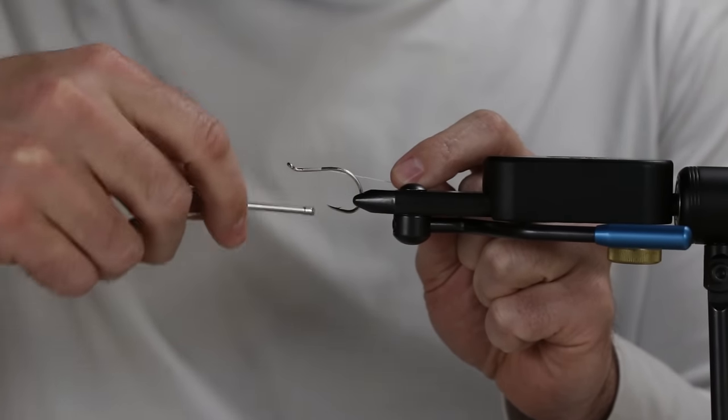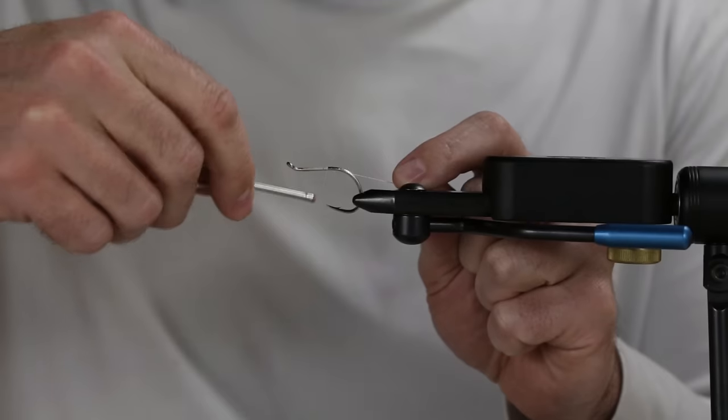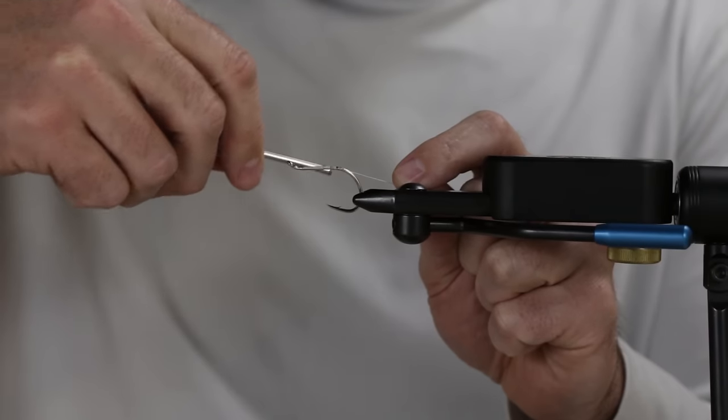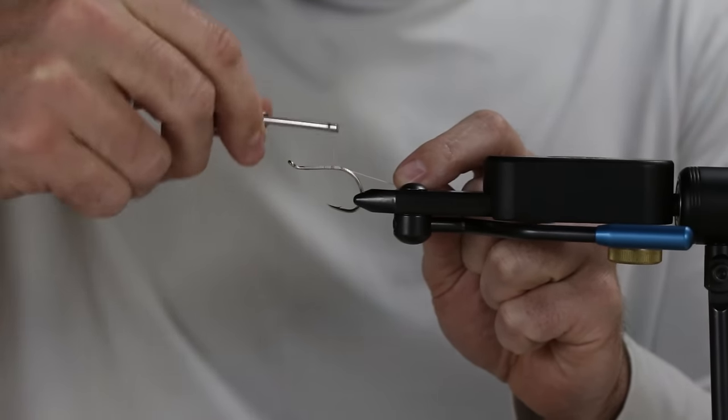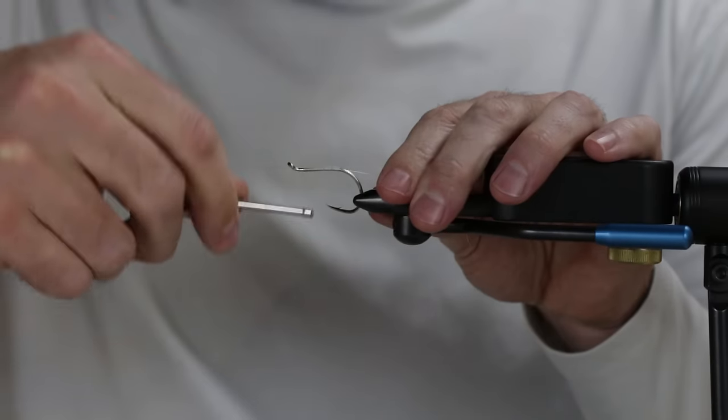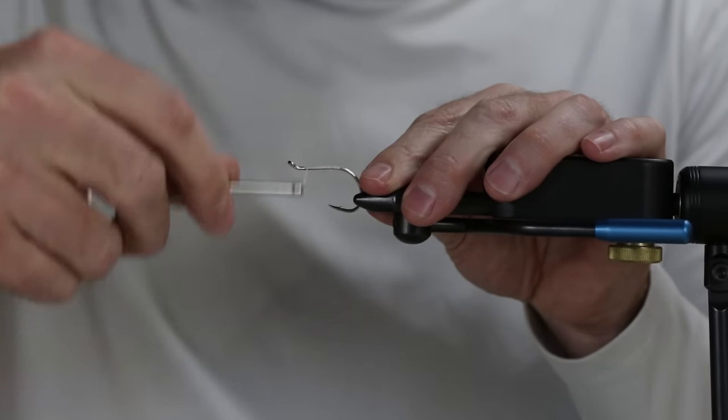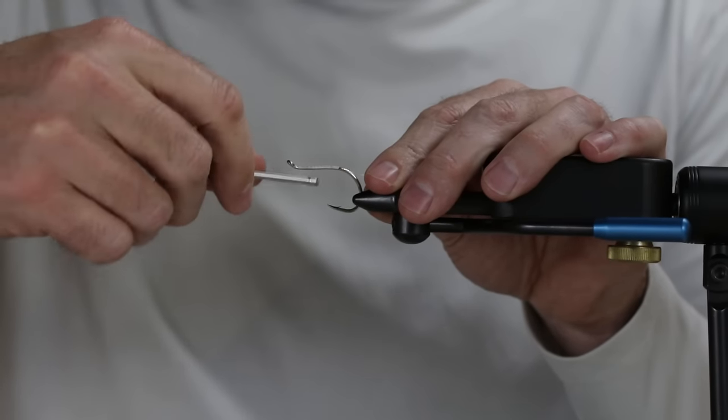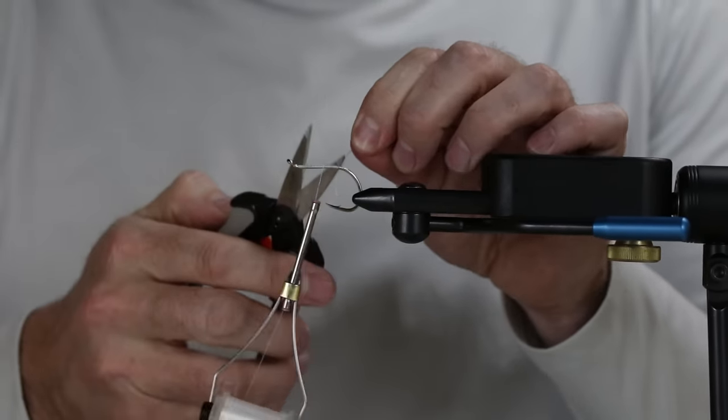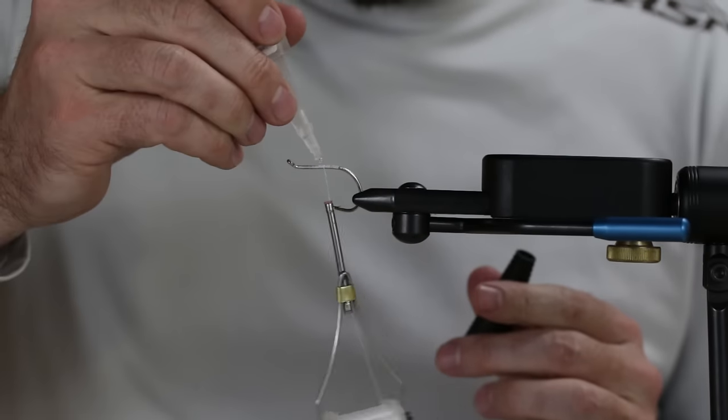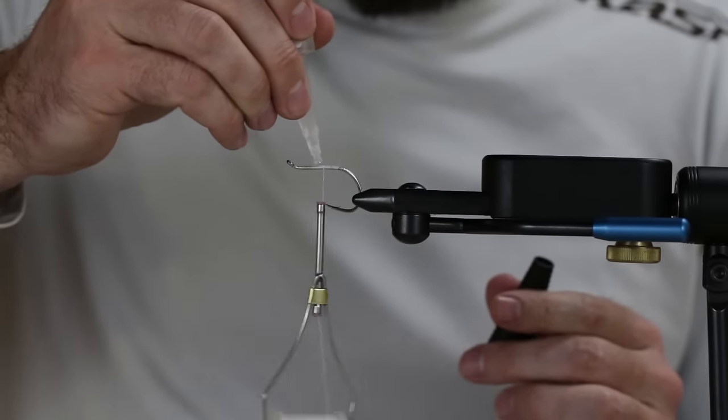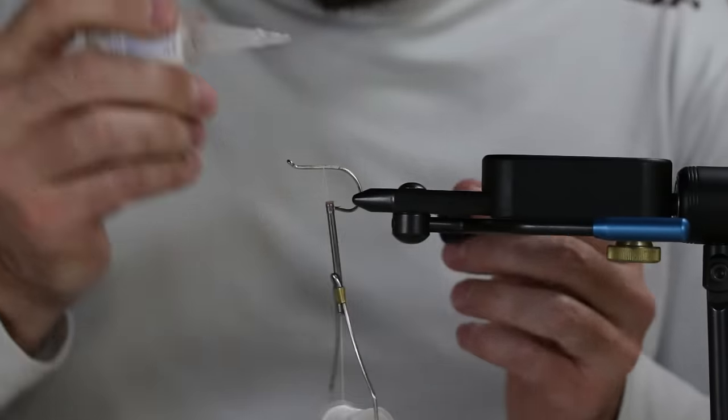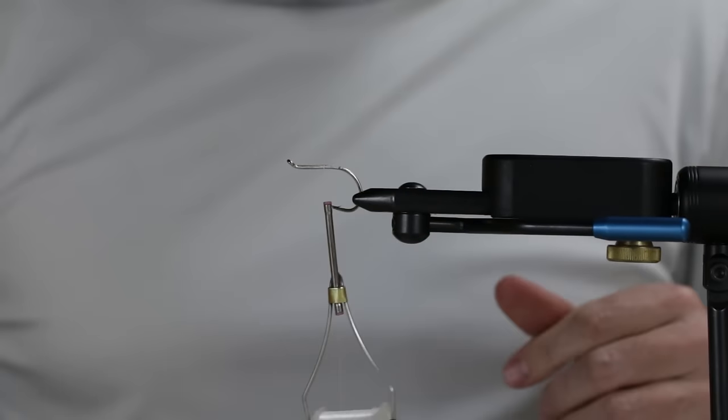I'm going to tie this one kind of more after the saltwater tarpon style, so we're going to leave this a little bit longer in the eye. But one of the things that I always like to do is get a really solid thread base down, especially on some of these bigger bugs, and then just a little bit of super glue to kind of lock that in nice and tight.